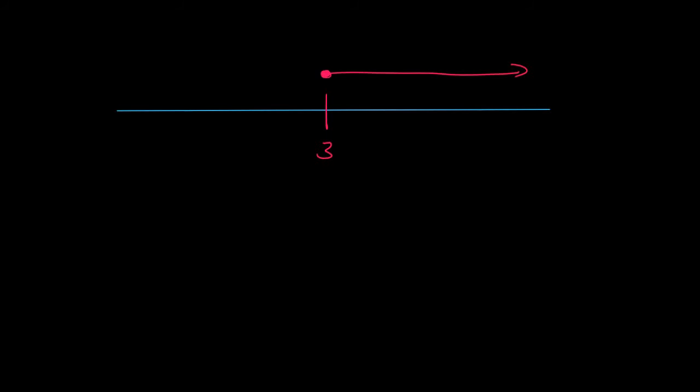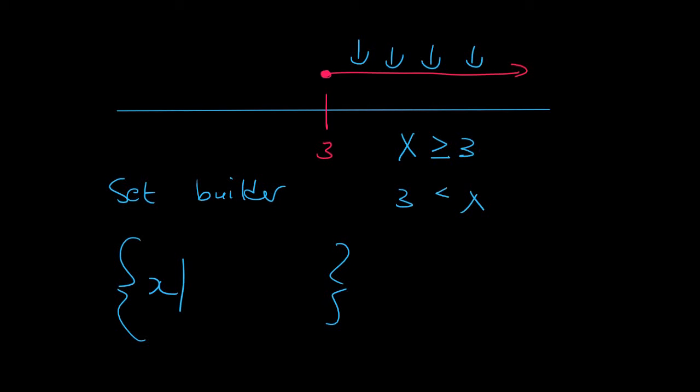Here's another one. In set builder, that's the funny brackets, we say x. These numbers here will be any number bigger than 3. So x, which is the number, must be bigger than or equal to 3. Of course you can also do it the other way around. You can put the x there as long as the crocodile is eating the x because x is bigger than 3.